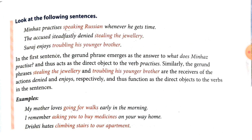Now, look at some more sentences. Minha's practice is speaking Russian whenever he has time. Second: The accused steadfastly denied stealing the jewellery. Third: Suraj enjoys troubling his younger brother. In the first sentence, speaking Russian; second sentence, stealing the jewellery; third sentence, troubling his younger brother — these play the role of object in the sentences.